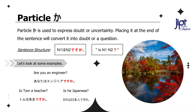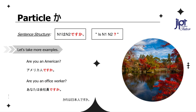Is Tom a teacher? Tom wa sensei desu ka? Is he Japanese? Kare wa nihonjin desu ka? Try making similar sentences on your own and practice more and more. Are you an American? Are you an office worker? Anata wa kaishain desu ka? Just remember to put particle ka at the end of the sentence to make it a question.